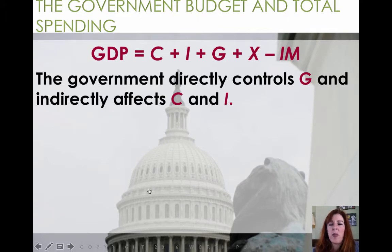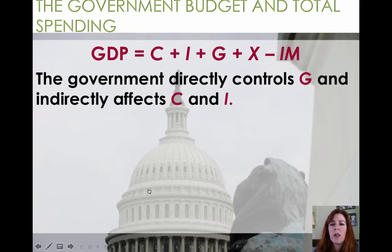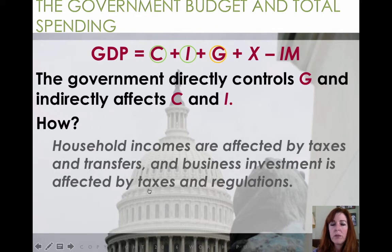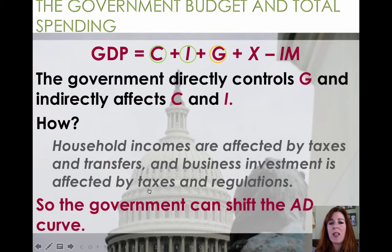So how exactly does fiscal policy affect the economy? As you recall, our GDP — gross domestic product — is made up of four basic spending streams: consumption, investment, government spending and purchases, and net exports. Government spending obviously directly controls the G aspect, but it also indirectly affects how we consume and how businesses spend — that's C and I. Our incomes as households are affected by taxes and transfers, and business investment is affected by taxes and regulations. Government can and does shift that kind of spending, and so shifts the aggregate demand curve.